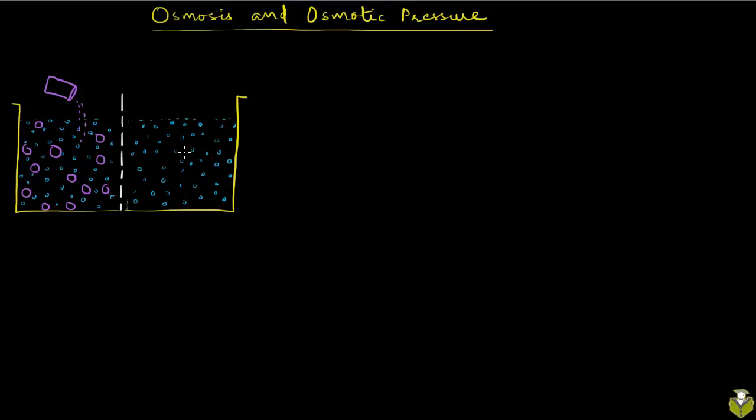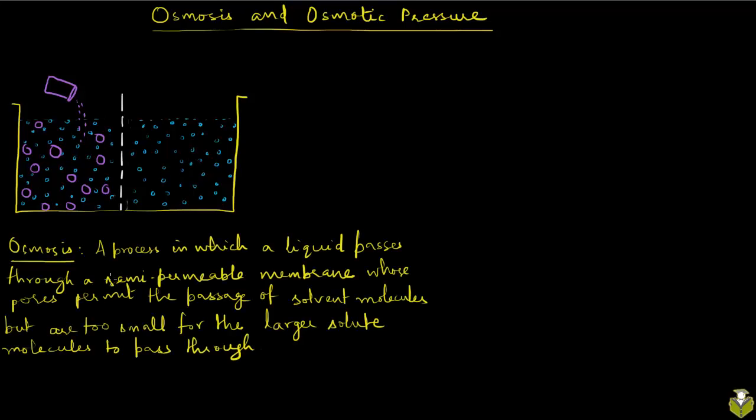So this process is called osmosis and I have written down the definition here. Osmosis is basically a process in which a liquid passes through this semi-permeable membrane whose pores permit the passage of solvent molecules, but are too small for these large solute molecules to pass through. So as you can imagine, this membrane, the semi-permeable membrane that is selective to what it allows and what doesn't is the key to this osmosis process.